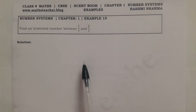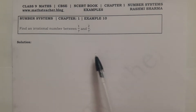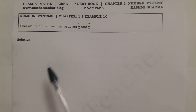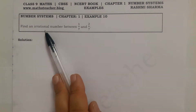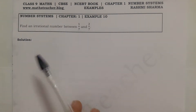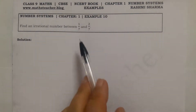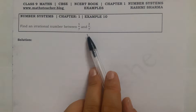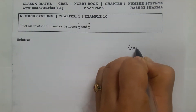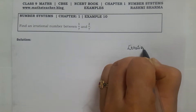So we have to find an irrational number. For rational numbers I have told you three methods, but for irrational numbers the easiest method is to find the decimal expansion. So whatever number is given, you find its decimal expansion, because we know that irrational numbers have a specific kind of decimal expansion.